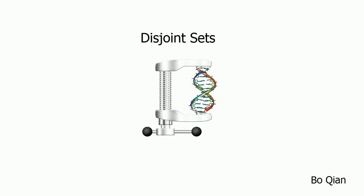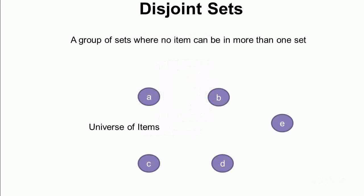Hello everyone. Today we'll talk about disjoint sets, which is a very useful data structure for graph algorithms. Suppose we have a universe of items which we want to manage with disjoint sets. Disjoint sets is a group of sets where no item can be in more than one set, so each item can belong to only one set.